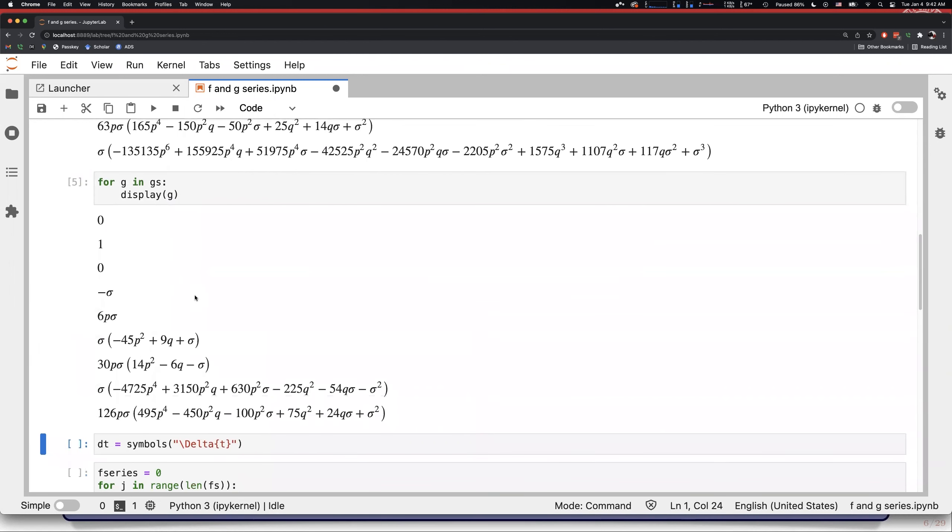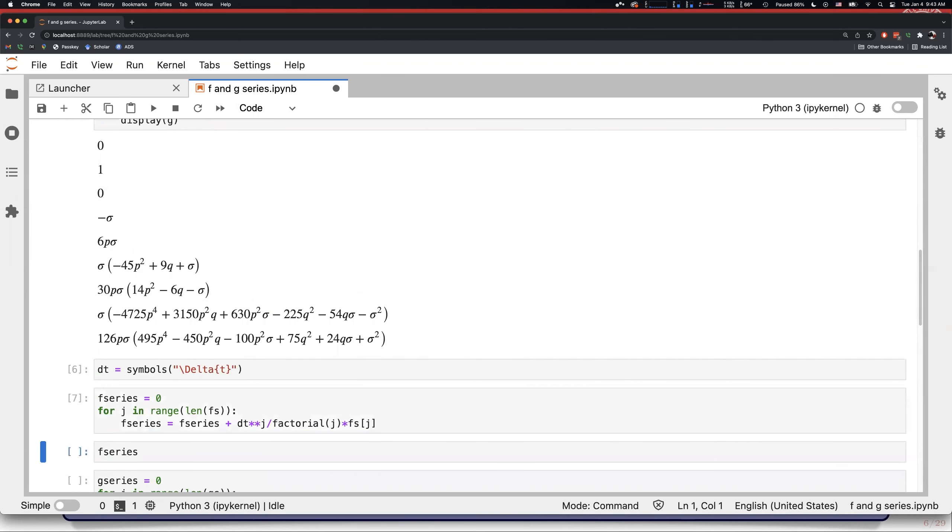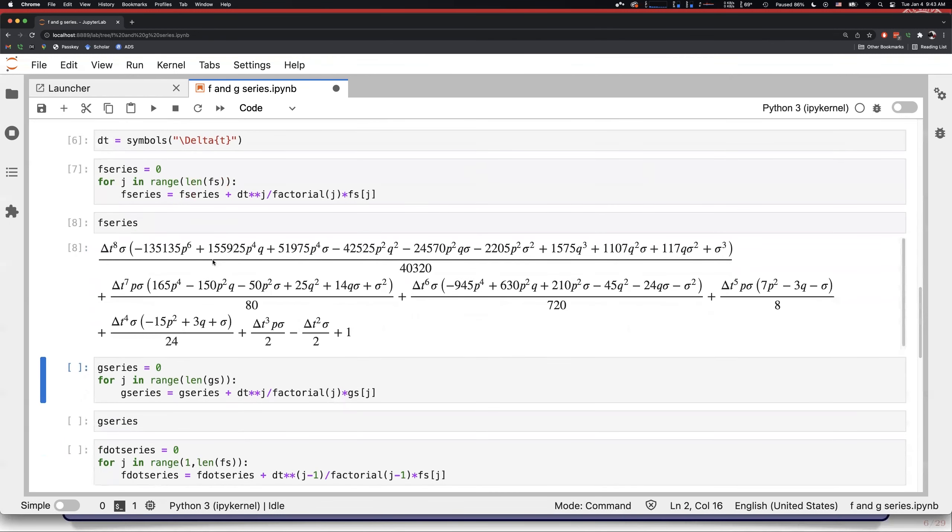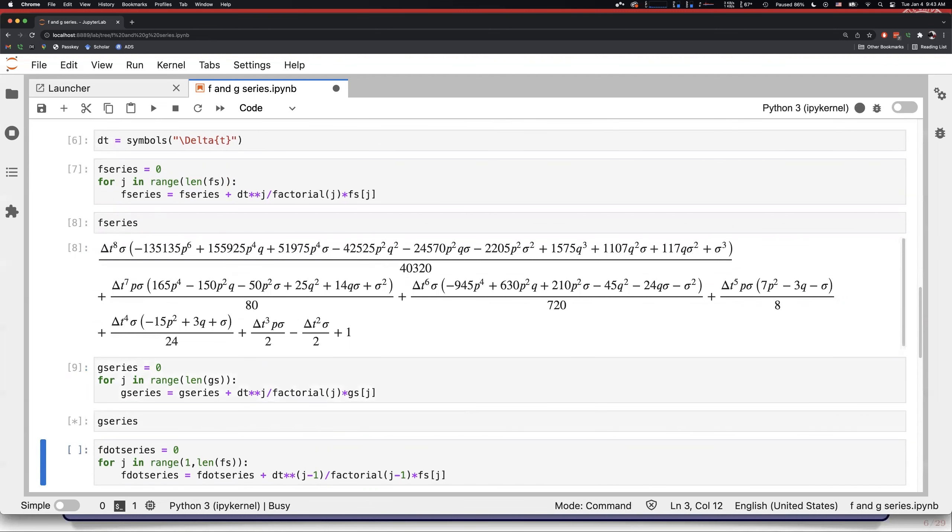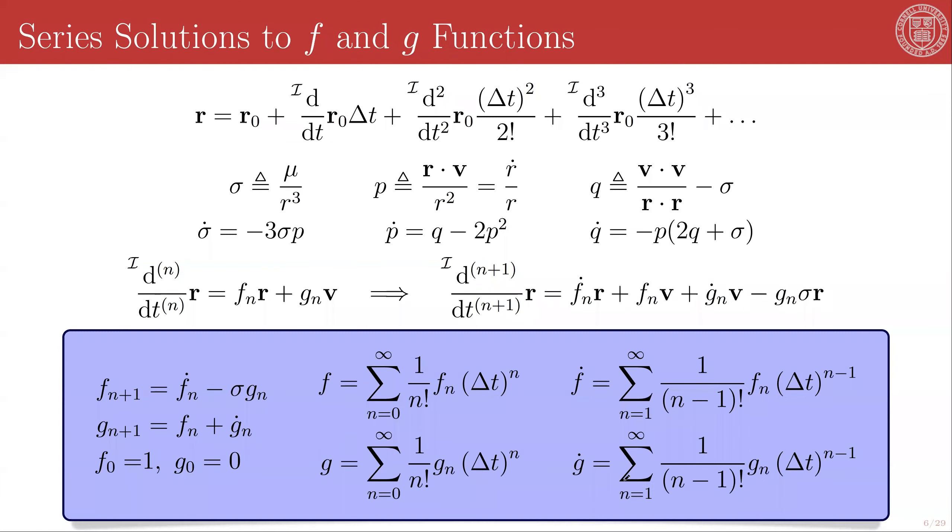So, these are just the coefficients of the series. In order to build the series, we need a time variable. So, we'll define delta t. And here is our eighth order series in f. And here is our eighth order series in g. And similarly, we can do the same thing for f dot, because we have the f dot relationship as follows, and the g dot relationship, which are also, you will note, only functions of f sub n and g sub n. And so, just by computing the coefficients of the f and the g series, we get the f dot and the g dot series effectively for free, like so.